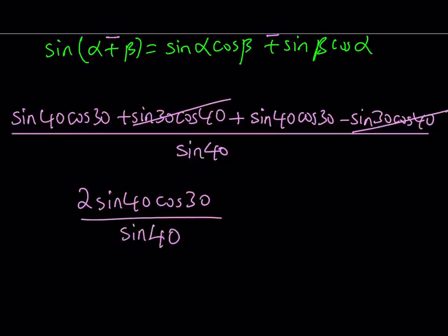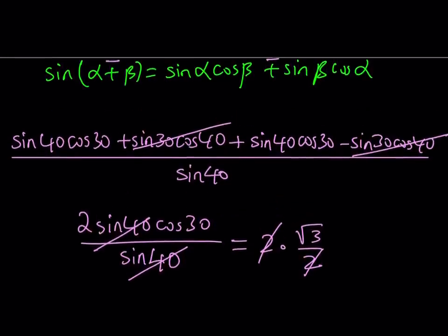Great. Now, what am I going to do with this? Well, sin 40 cancels out, and it leaves us with 2 times cos 30. But cos 30 equals √3/2. So if you replace cos 30 with √3/2, the 2s are going to cancel out, and our expression is going to be √3 in the simplest form.